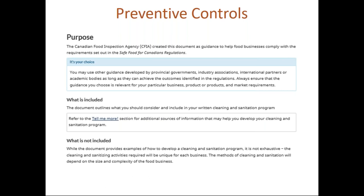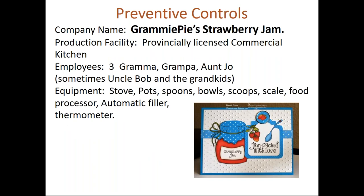The example company is Grammy Pies Strawberry Jam. They produce their product in a provincially licensed commercial kitchen with three employees — Grandma, Grandpa, and Aunt Jo — sometimes Uncle Bob and the grandkids. The equipment they use includes a stove, pot, spoons, bowls, scoops, scales, food processor, automatic filler, and a thermometer. Those are the main components of the example used today.